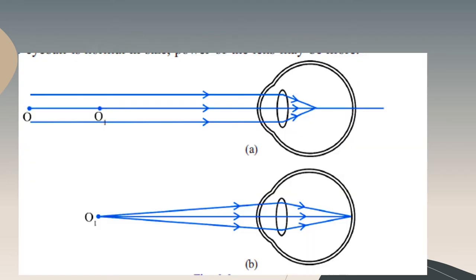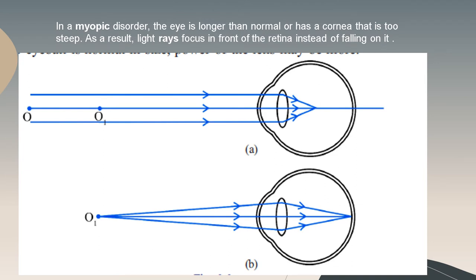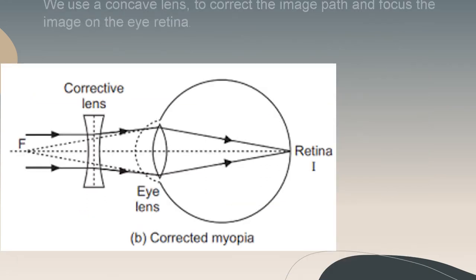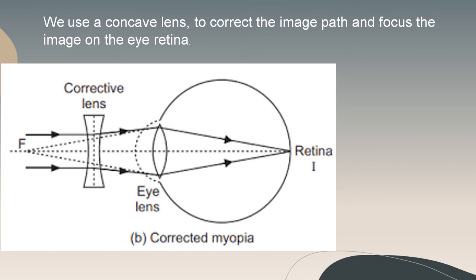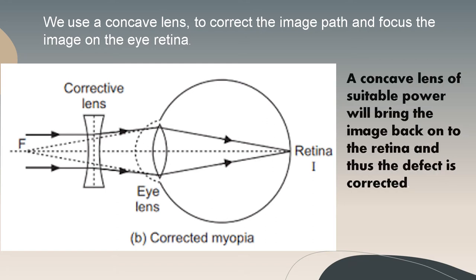The cause of myopia: this defect may arise due to excessive curvature of the eye lens or elongation of the eyeball. In a myopic eye, the eyeball is longer than normal or has a cornea that is too steep, causing light rays to focus in front of the retina instead of on it. A concave lens of suitable power is used to correct myopia, bringing the image back onto the retina.